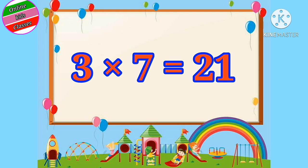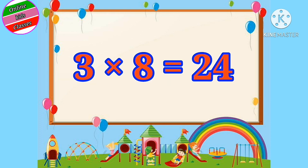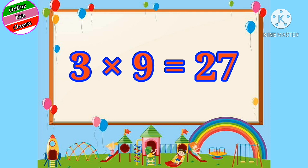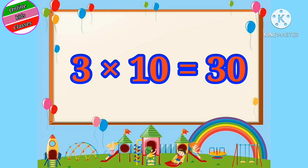Three sevens are twenty-one. Three eights are twenty-four. Three nines are twenty-seven. Three tens are thirty.